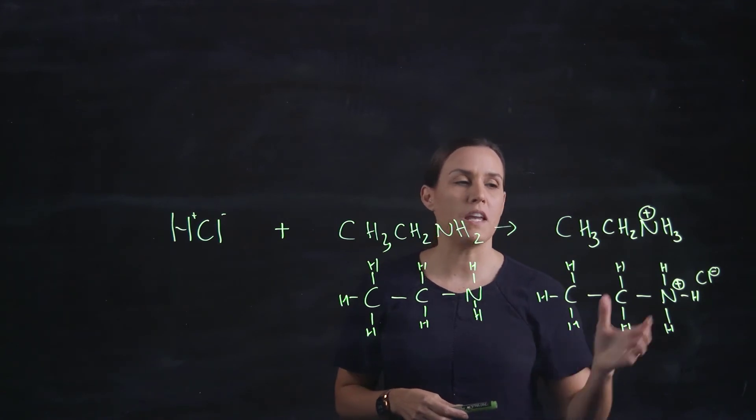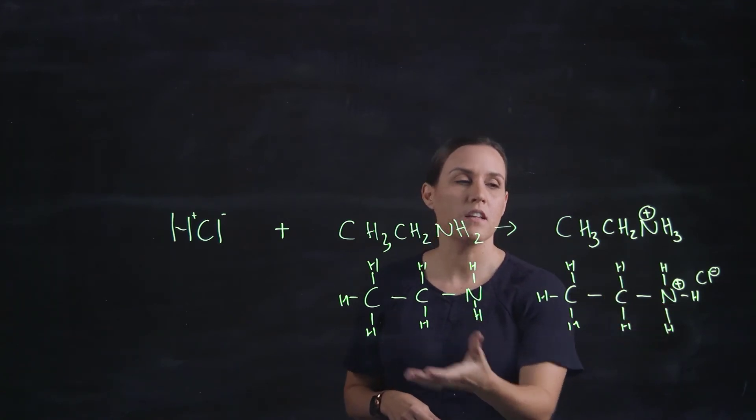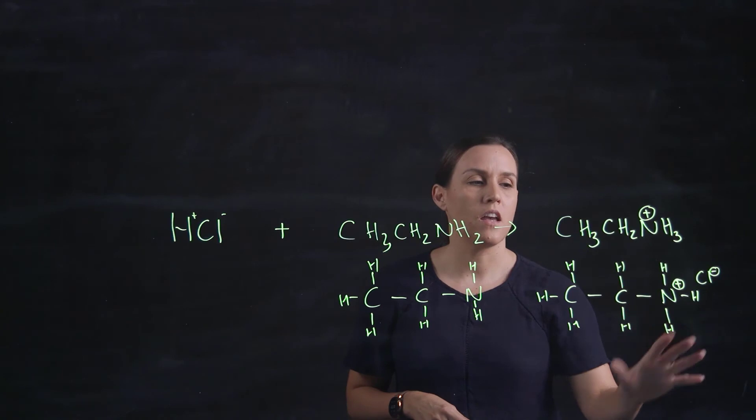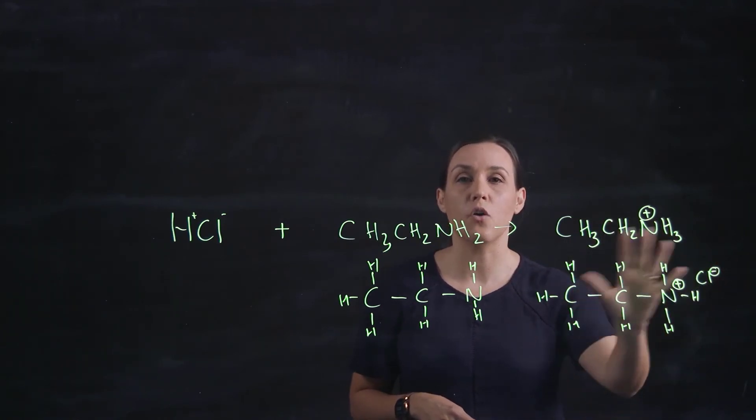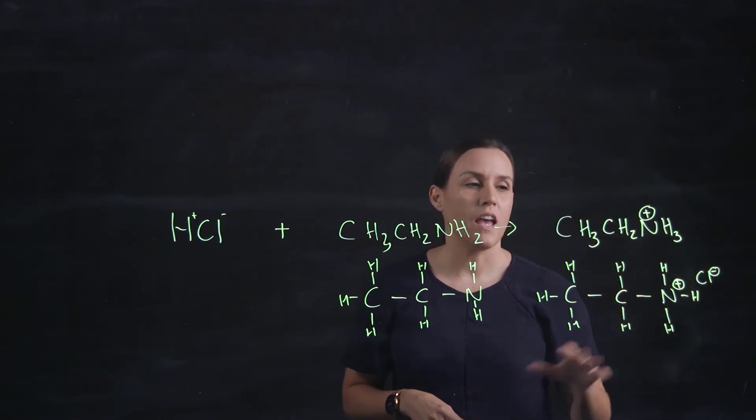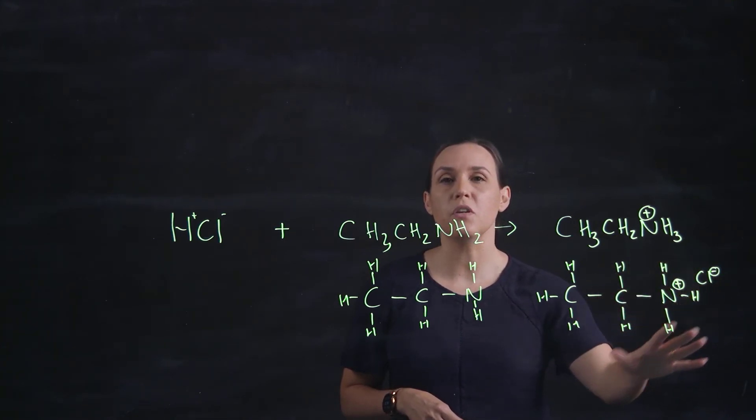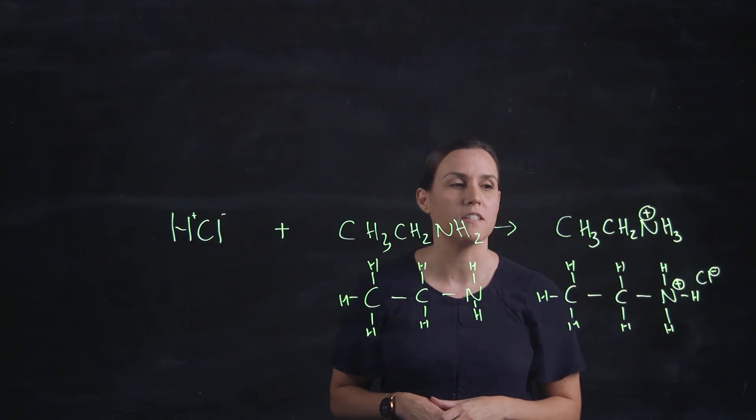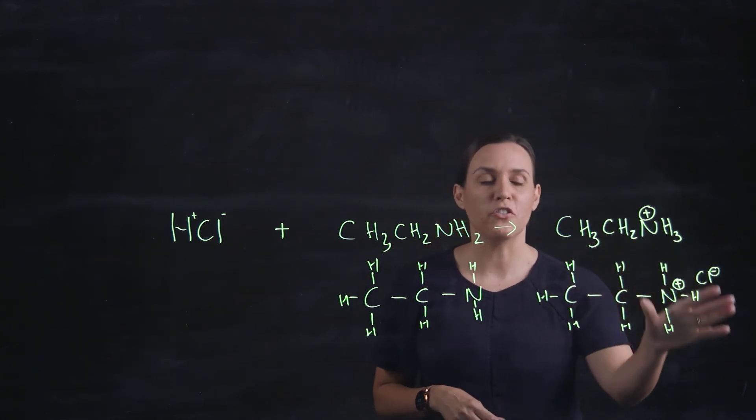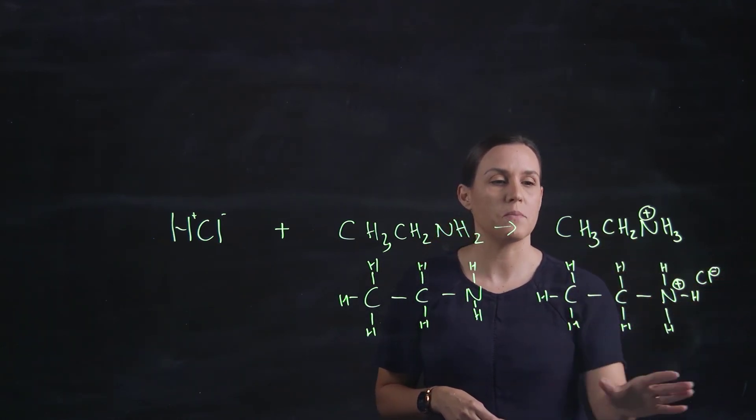So it goes from being a covalent compound into an ionic compound and we call this a hydrochloride salt of the amine. These ones will crystallize out of the solution more easily because they are ionic which is a crystalline solid depending on the compound, but something this small would be fairly crystalline.